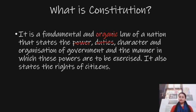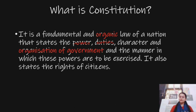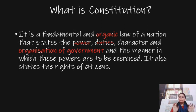And the organization of government depends on the relationship between different organs. For example, legislative and executive. If legislative and executive are interdependent on each other, then it is a parliamentary organization. If legislative and executive are completely separate, then it is a presidential system. This is how the organization of government is defined by the constitution.